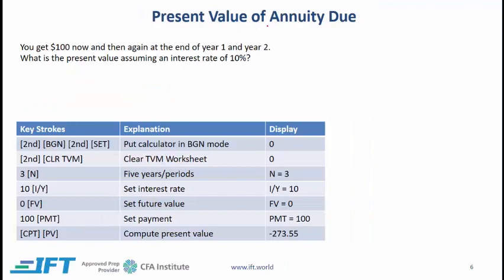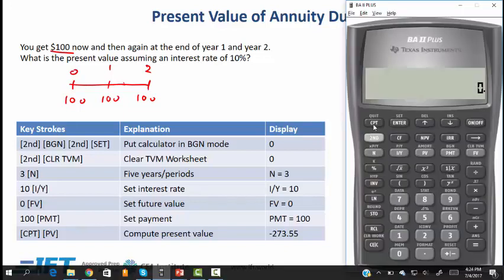We will now look at the present value of an annuity due. Say you get $100 now and then again at the end of year 1 and year 2, and we want the present value assuming a rate of 10%. At time 0 you are getting 100, then at time 1 another 100, and at time 2 another 100 — so there are 3 payments. N is 3, and the first payment is happening at the start of period 1.